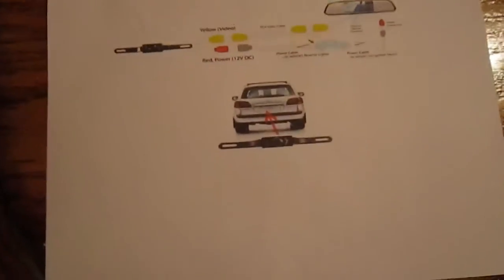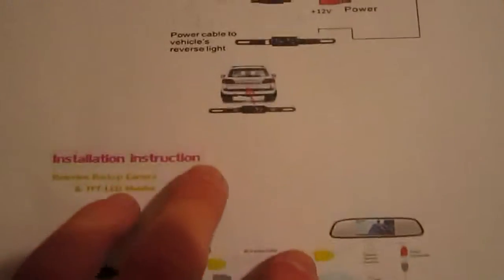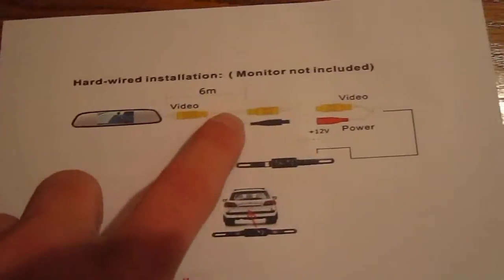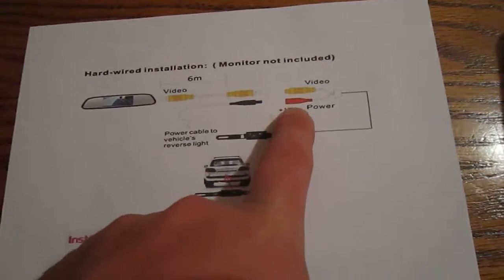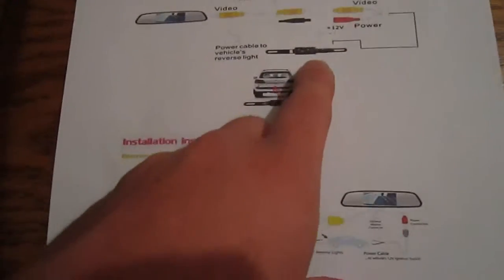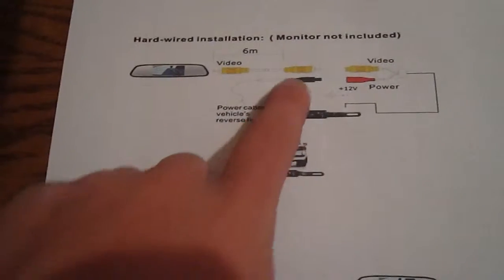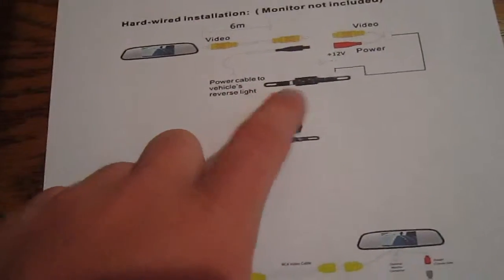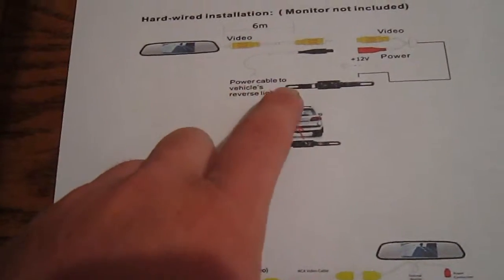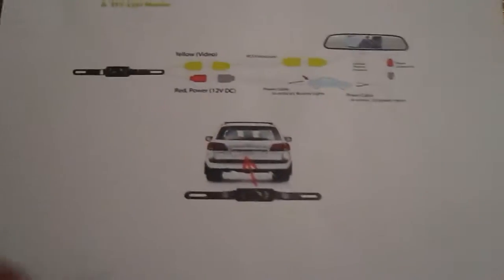So I went online on Amazon and I got photos in the install. It shows the mirror, it shows the video line, it shows the video and a power one. You got yellow and red going down to the unit. Obviously it connects. And then there's a black wire that goes into the red power line that then says power cable to vehicle's reverse light. Or this one here is a little bit more detailed than the top one.